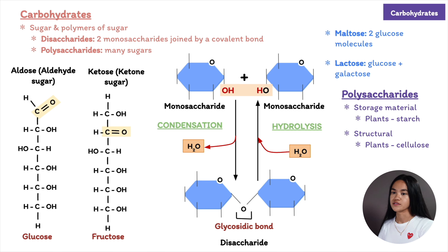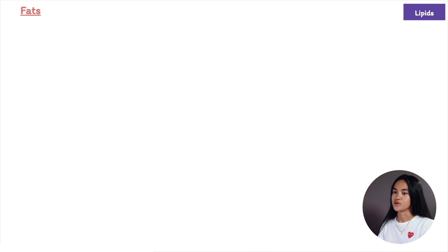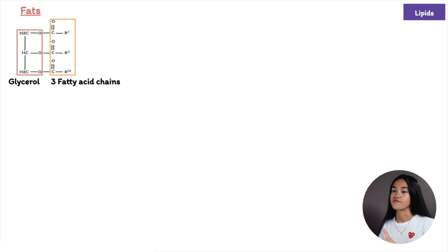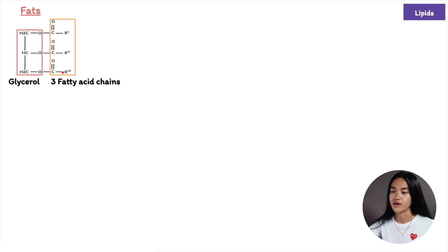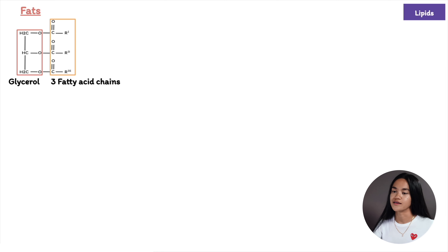We're going to cover three types of lipids: fats, phospholipids, and steroids. Fats are not polymers. A fat consists of one glycerol molecule joined to three molecules of fatty acids. Glycerol is an alcohol with each of its three carbons linked to a hydroxyl group. A fatty acid is a long carbon skeleton with a carboxyl group at one end and a hydrocarbon chain making up the rest. These fatty acids can all be the same or they can be two or three different kinds.